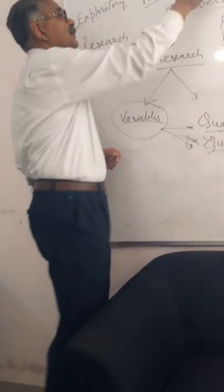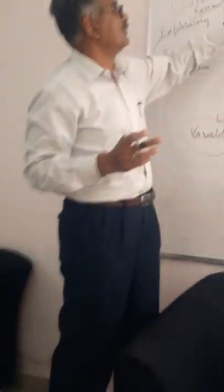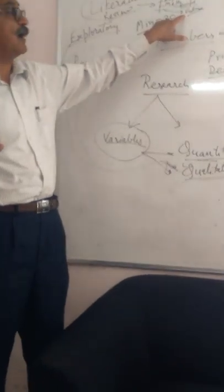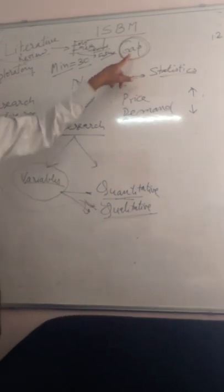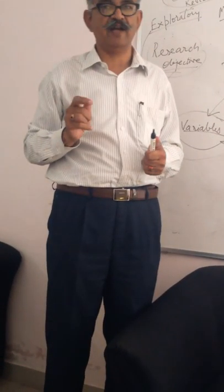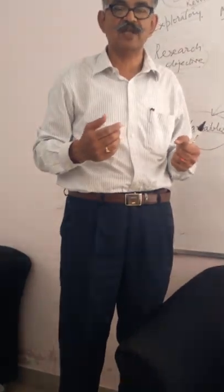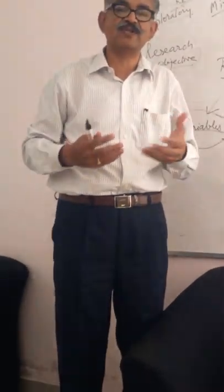Most researches also write that in future this kind of research should be carried out — they say we could not do it, you should do it. When you read these, you will find there are plenty of issues on which research has not been carried out. That is called identification of a gap, or gap analysis. For example, in entrepreneurship, plenty of research has been carried out, but most researchers have said they have not studied women entrepreneurs doing business in desert areas of Rajasthan through self-help groups — women who are very poor and still struggling to start their own businesses.